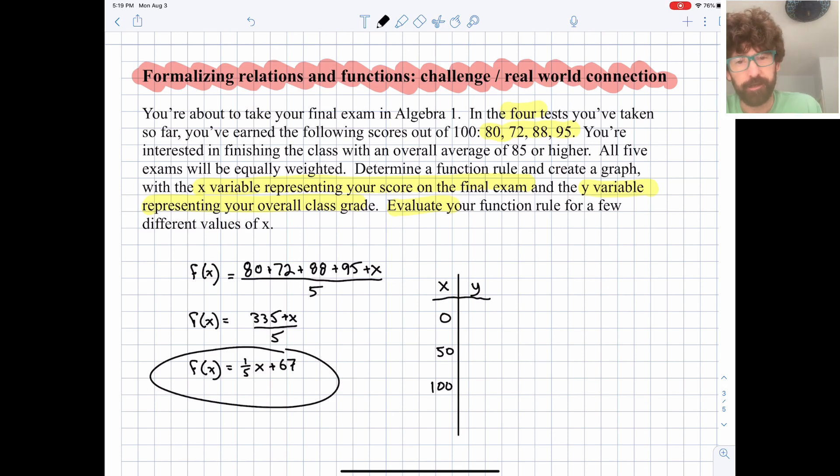And y, and again, let's actually call this f of x, just to be a little bit more formal with our notation. So if we get a zero on the final exam, we get a 67 overall. If we get a 50 on the final exam, one-fifth times 50 is 10, we get a 77 overall. And if we ace the final exam, we're going to get an 87 overall. So it looks like we have the possibility of getting our 85 or higher, but we've evaluated a few different values of x.